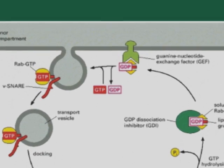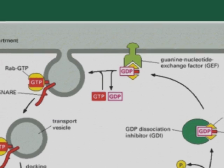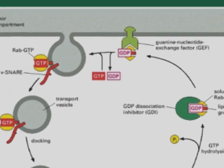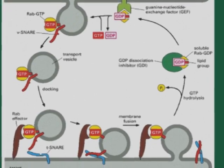RAB proteins are localized to the cytosolic face of distinct intracellular membranes. They act as switches in the endomembrane system and can inhibit or activate vesicles' movement and fusion throughout the cell.